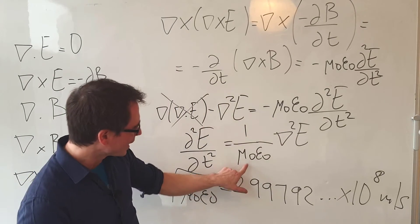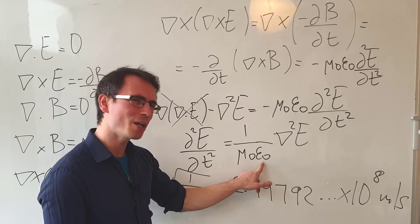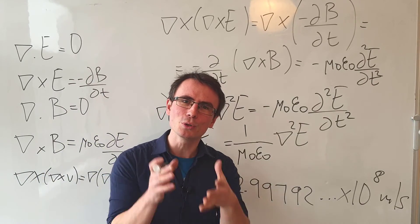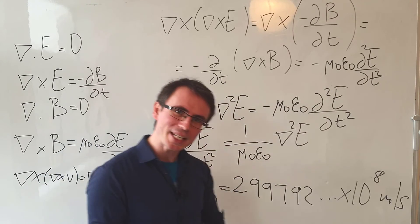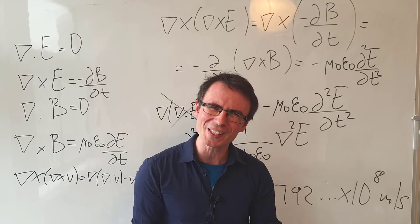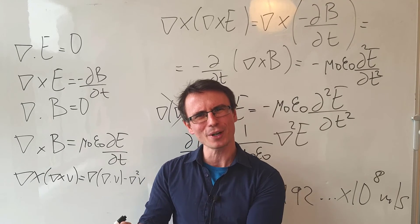Here is something strange though. The permeability and the permittivity of vacuum do not change according to the observer. So this means that the speed of light should be constant in all frames of reference.